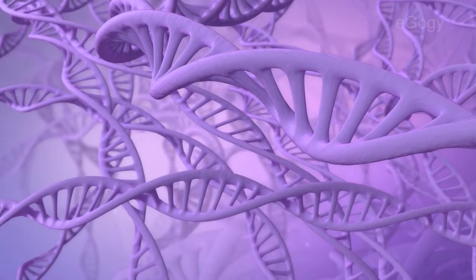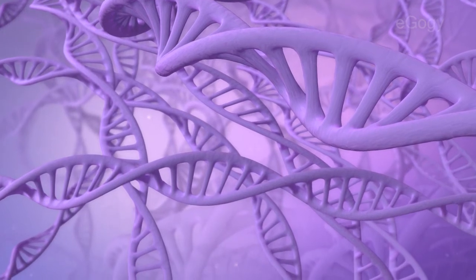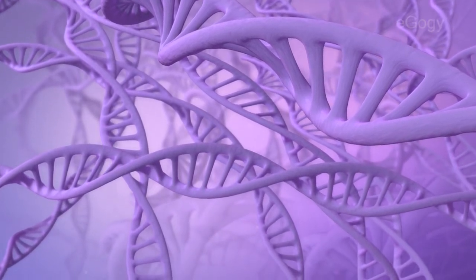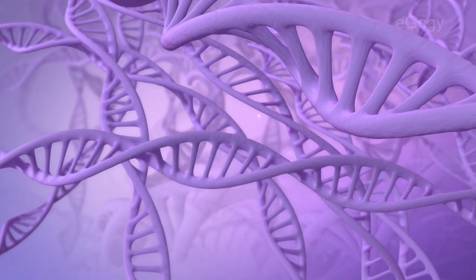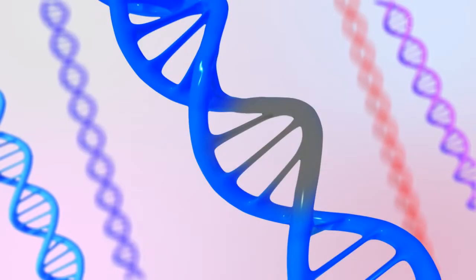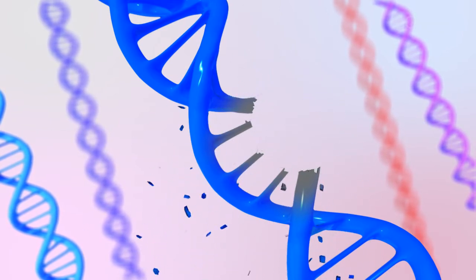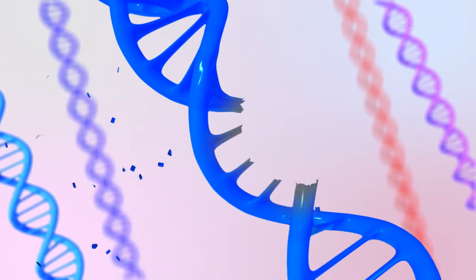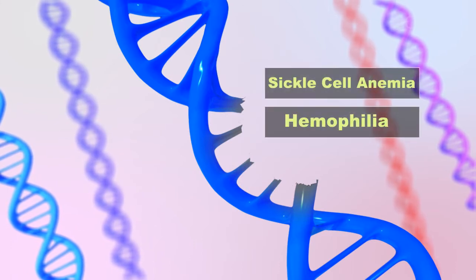A genetic disease or disorder is the result of changes or mutations in an individual's DNA. Genetic diseases are passed by heredity, not due to infection. A defect in genes is the reason for these types of diseases. Sickle cell anemia and hemophilia are major examples of genetic diseases.